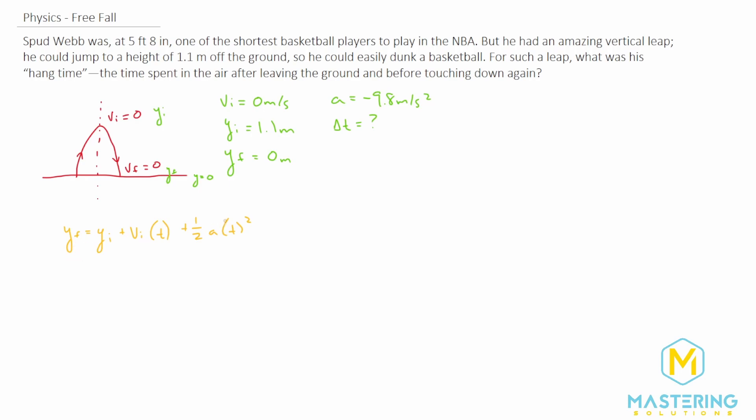We can go through and simplify this though, because as we talked about, the y final is zero, so that will go away. And we also said that the initial velocity is also zero, so that can also go away. So now when we write it, the simplified version, we have zero equals y initial plus one half times the acceleration times the time squared.